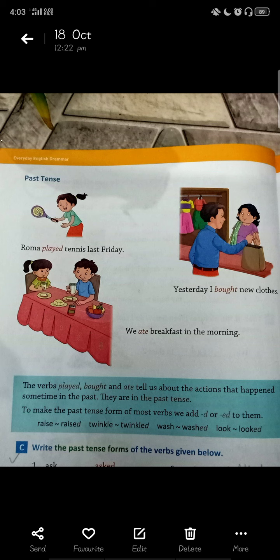To make the past tense form of most verbs, we add D or ED to them. For example: raise — raised, simply add D. Twinkle — washed, add ED. Look — looked. So in the past tense, we convert present to past by simply adding D or ED.